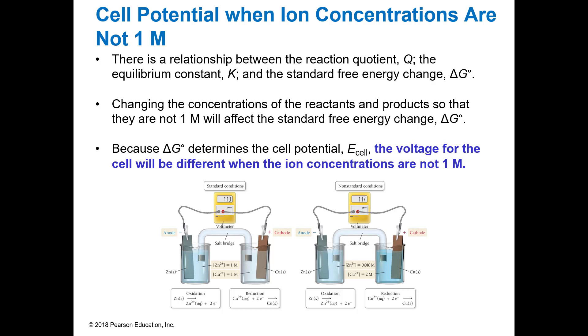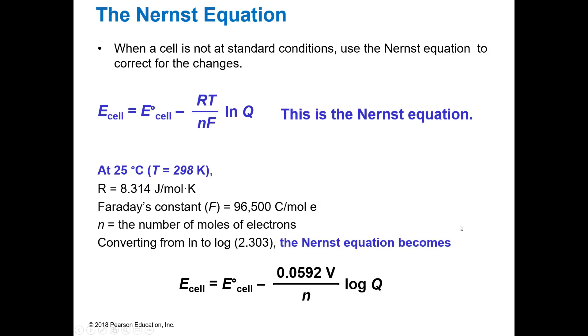Because the delta G really is what's determining the cell potential, the voltage will be different if your ions aren't at standard conditions. And so we use something called the Nernst equation.